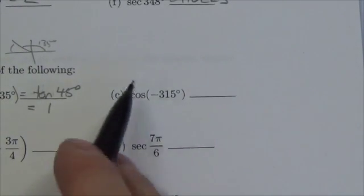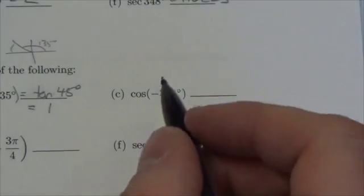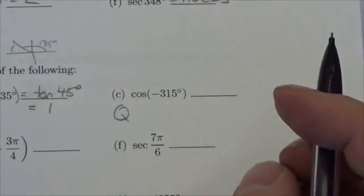So this question here wants us to come up with the exact value of the cosine of negative 315 degrees. Okay, first of all, what quadrant is negative 315 in?